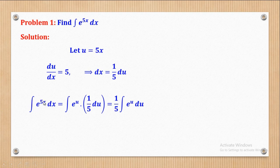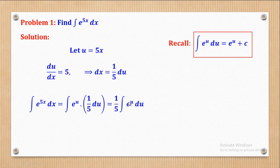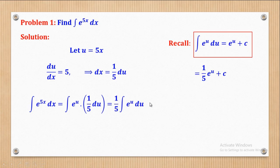Since 5x equals u, I substitute u where there is 5x. When I simplify, remember 1/5 is a constant so I put it out. I remain with e^u and du. Remember, the integral of e^u with respect to u equals e^u plus c. So this expression gives me (1/5) multiplied by e^u, plus c.